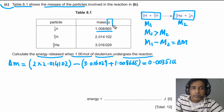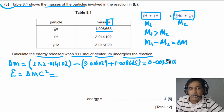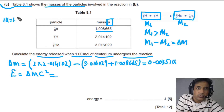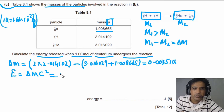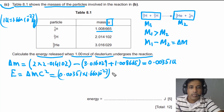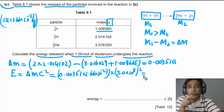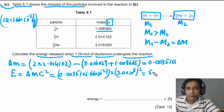Energy released in one reaction equals mass difference times c². Since the mass difference is in atomic mass units, we convert: 1 u = 1.66 × 10⁻²⁷ kg. So we calculate 0.00351 × 1.66 × 10⁻²⁷ kg × (3.0 × 10⁸)². This gives energy released per reaction equal to 5.24 × 10⁻¹³ joules.